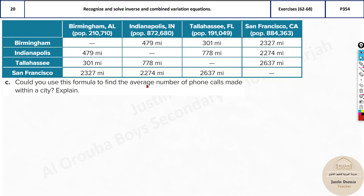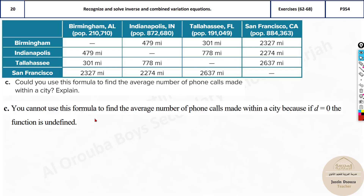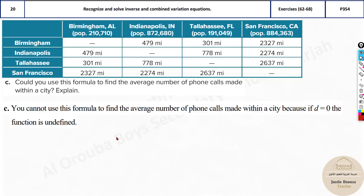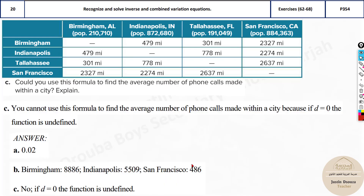Could you use this formula to find the average phone calls made within a city? No, because within one city — like Birmingham to Birmingham — the distance is 0. Dividing by 0 or 0 squared is undefined, so the formula cannot be applied for calls within a single city.